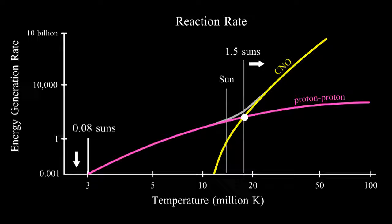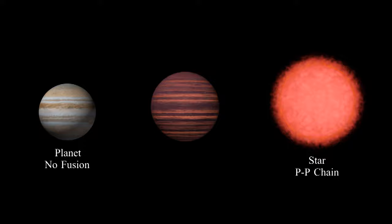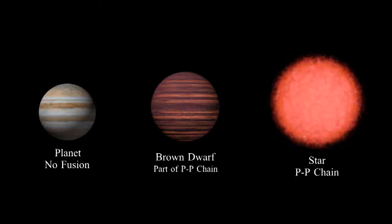Planets like Jupiter are too small to do nuclear fusion, but there's something halfway between a planet and a star. It's called a brown dwarf.